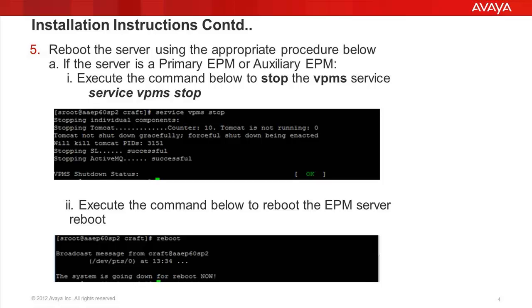Once we have installed the required RPM on the EPM and the MPP servers, we need to reboot each server after installing the RPM. For the primary EPM and the auxiliary EPM servers, we need to first execute the 'service VPMS stop' command on both servers. This will stop all the VPMS services running on the EPM servers, and then we can proceed with the reboot using either the reboot command or 'shutdown -r now'.